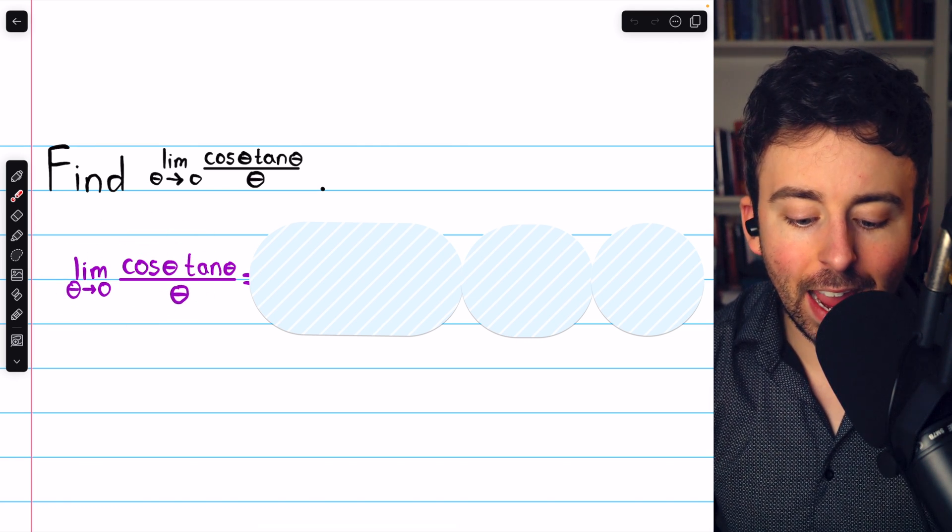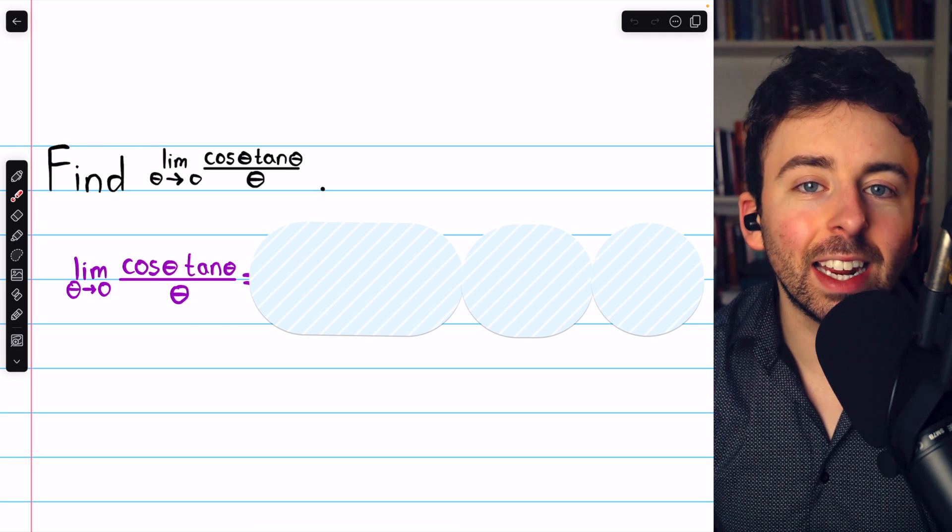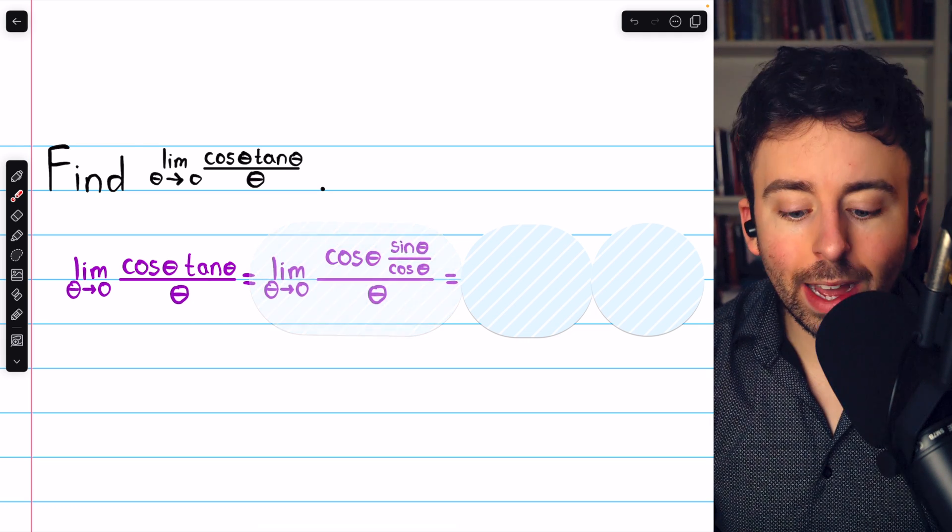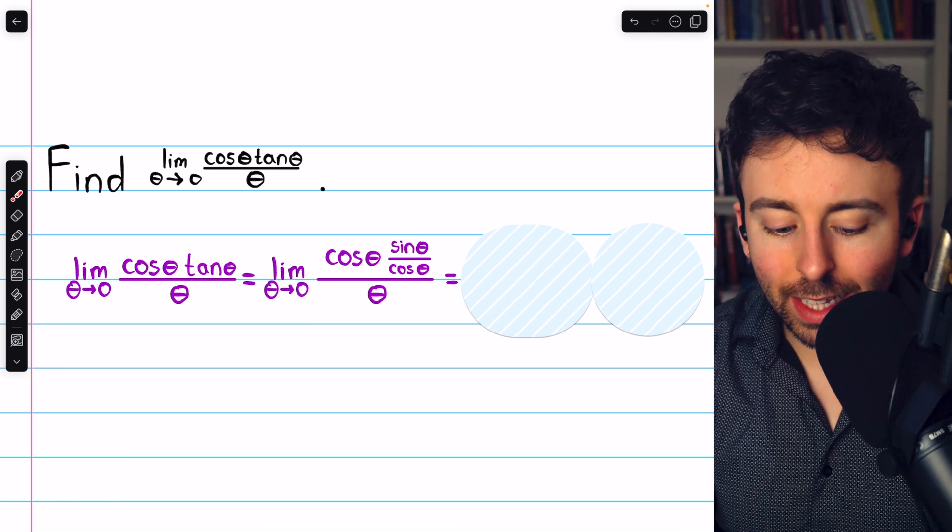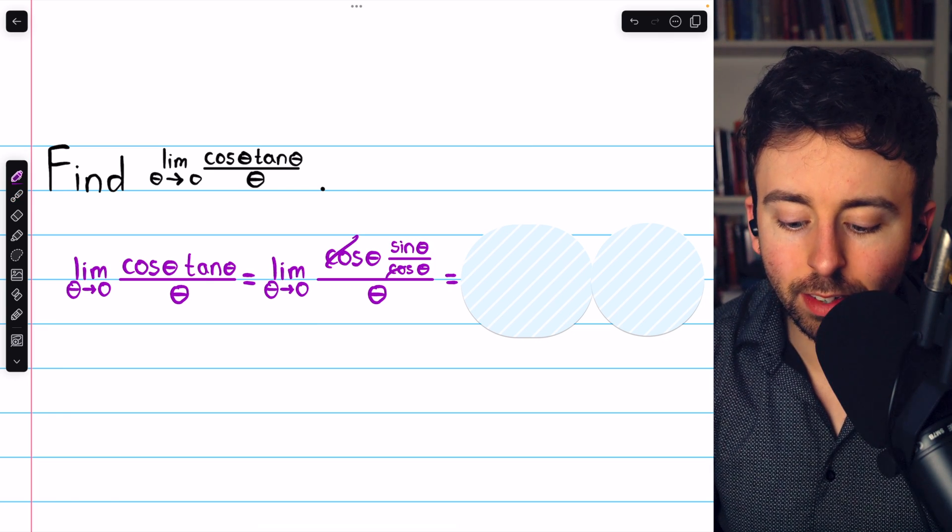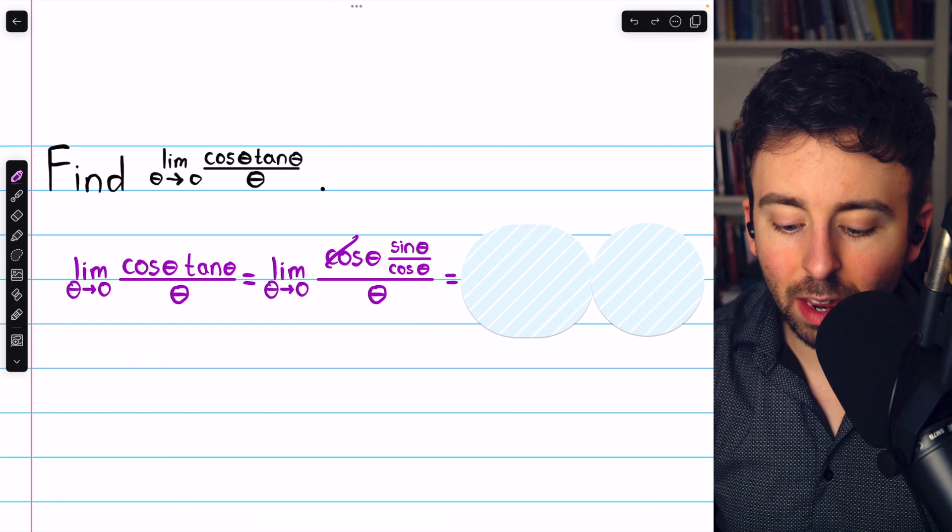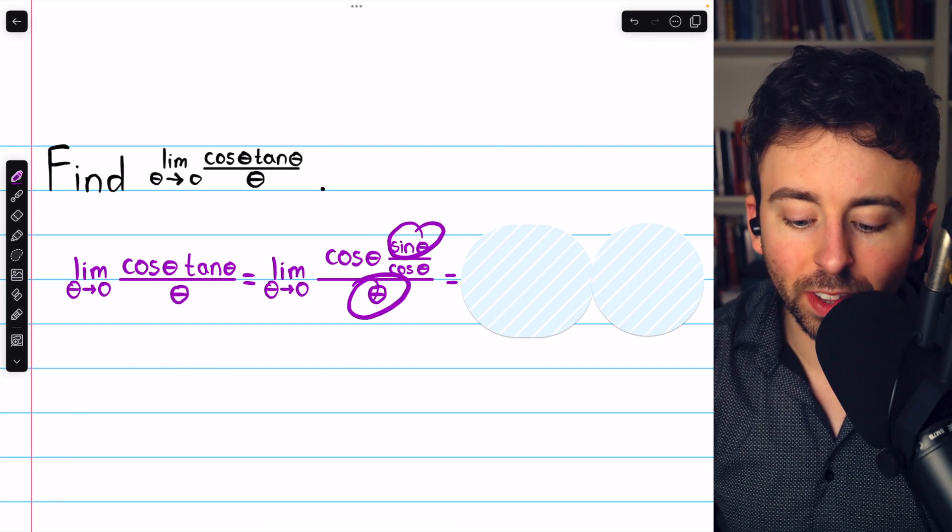We'll begin by rewriting tan theta as sine theta over cosine theta. Why is rewriting tan theta like this so helpful? Well, we immediately see that the cosines would cancel out and then we'll be left with sine theta over theta,